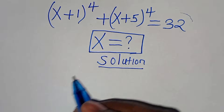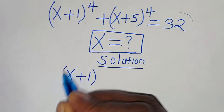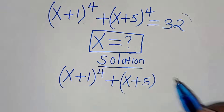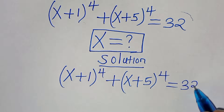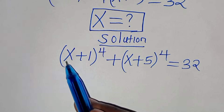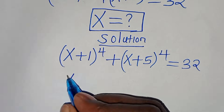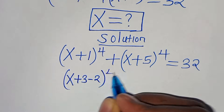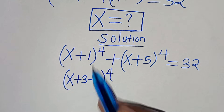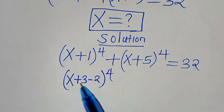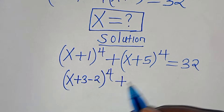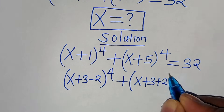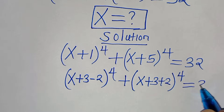We have x plus 1 to the power of 4, then plus x plus 5 to the power of 4, this is equal to 32. We can express x plus 1 as x plus 3 minus 2, raised to the power of 4 — since 3 minus 2 equals 1 — and we can express x plus 5 as x plus 3 plus 2, raised to the power of 4. This is equal to 32.